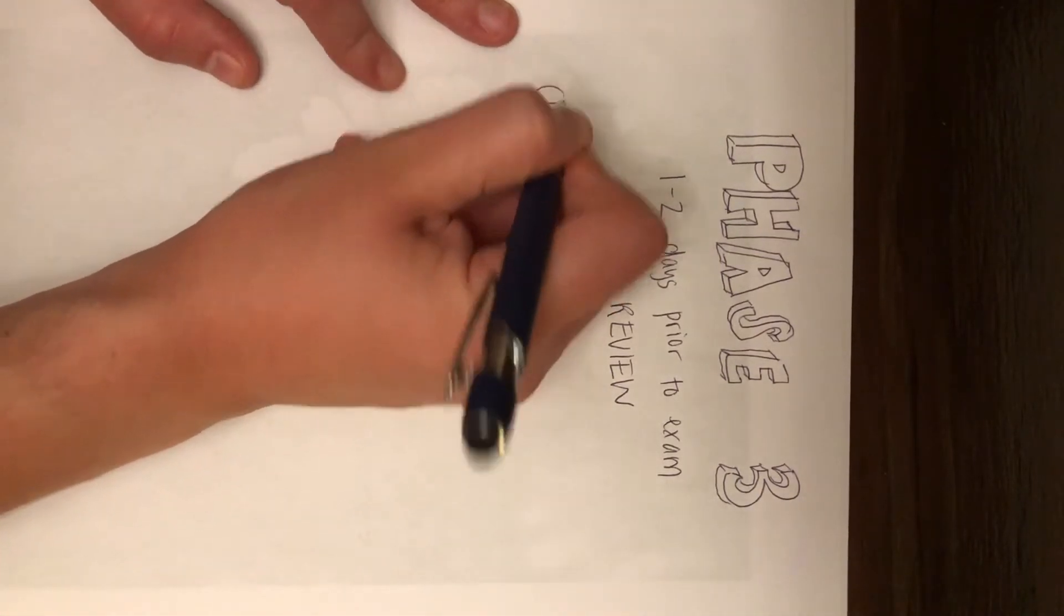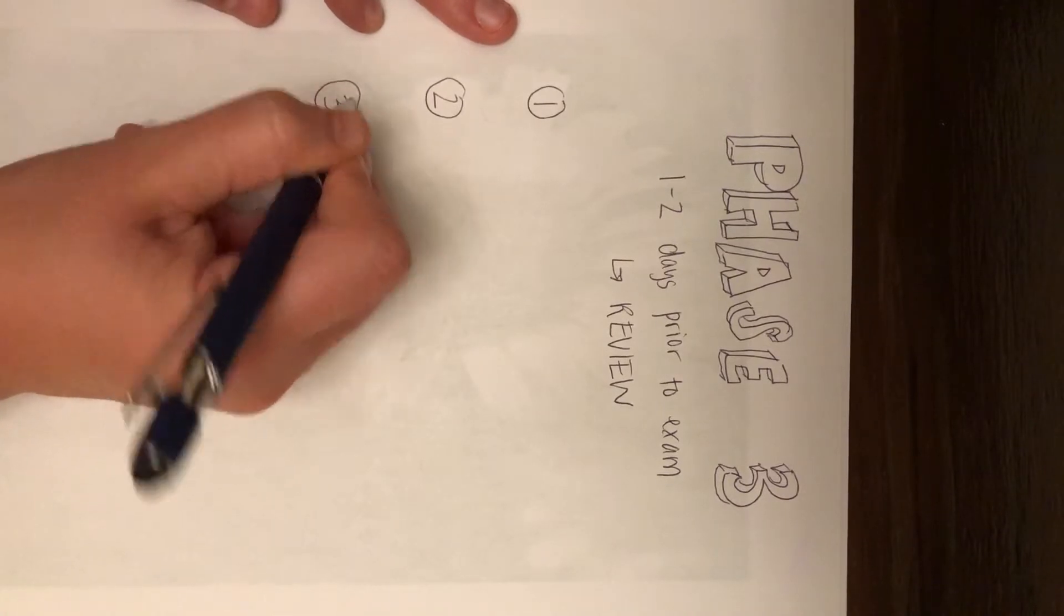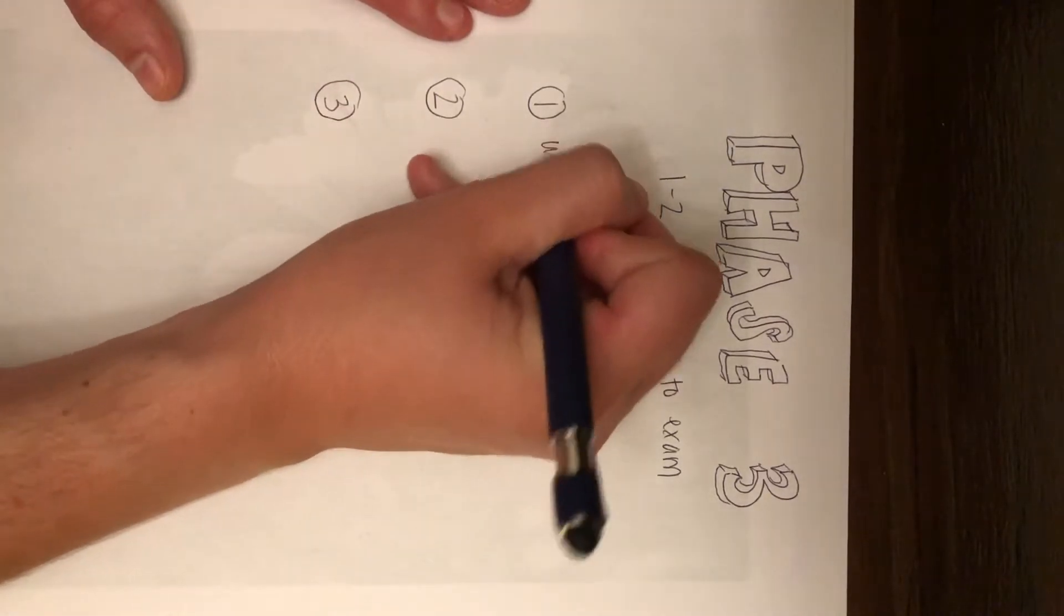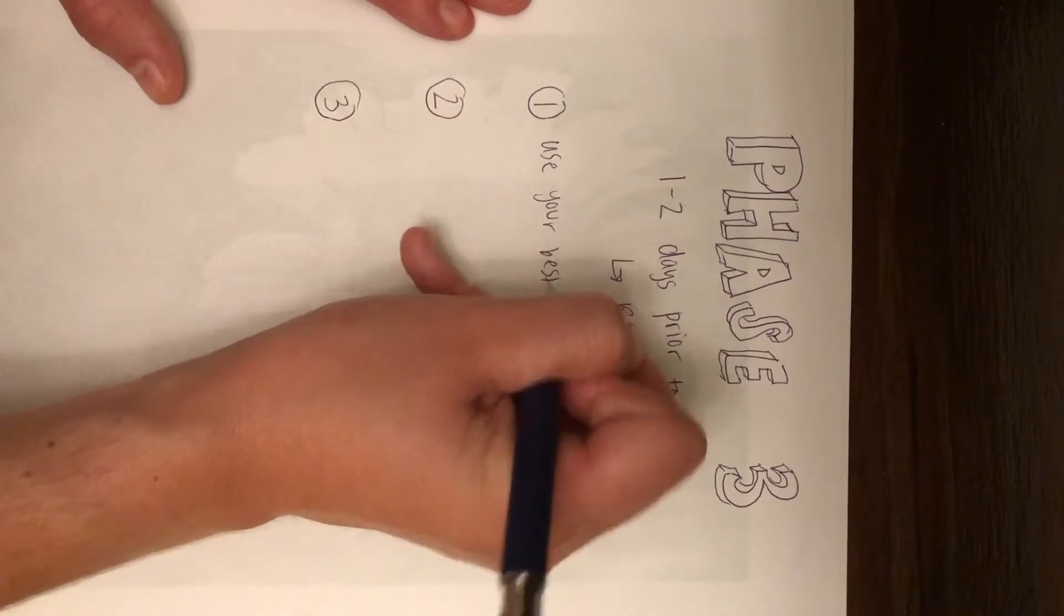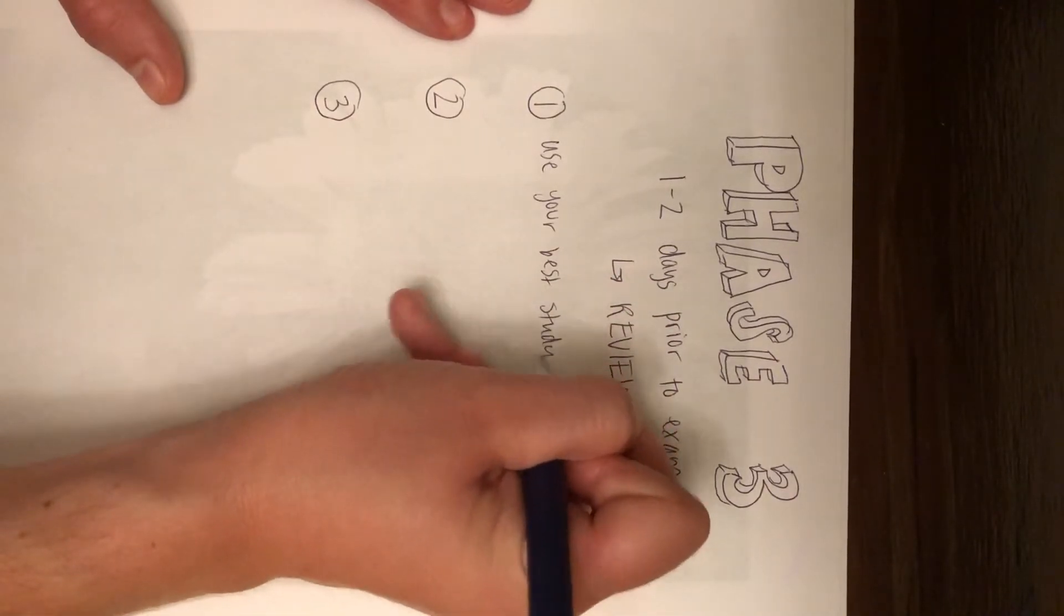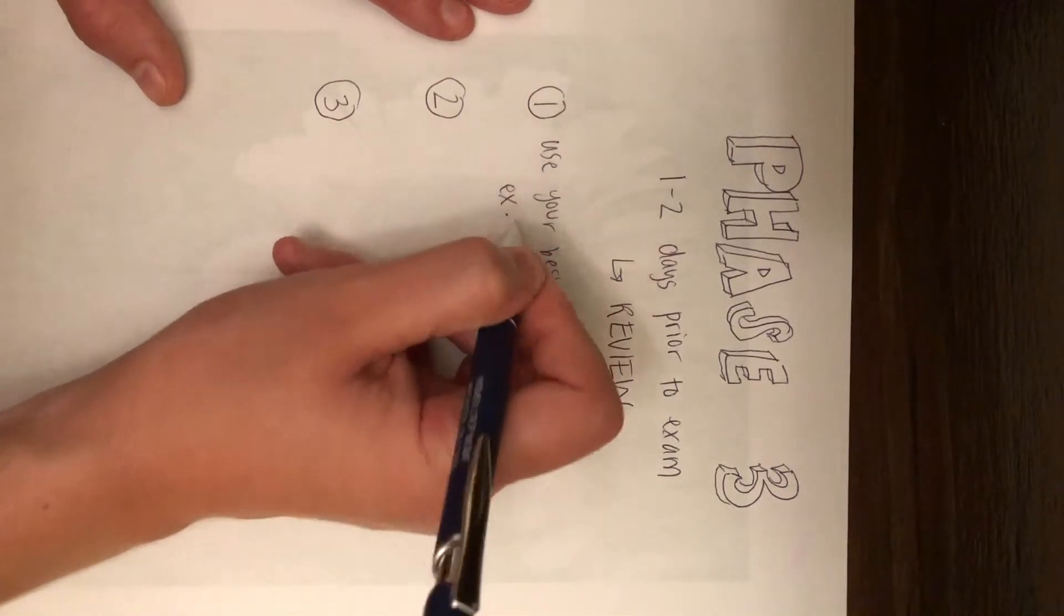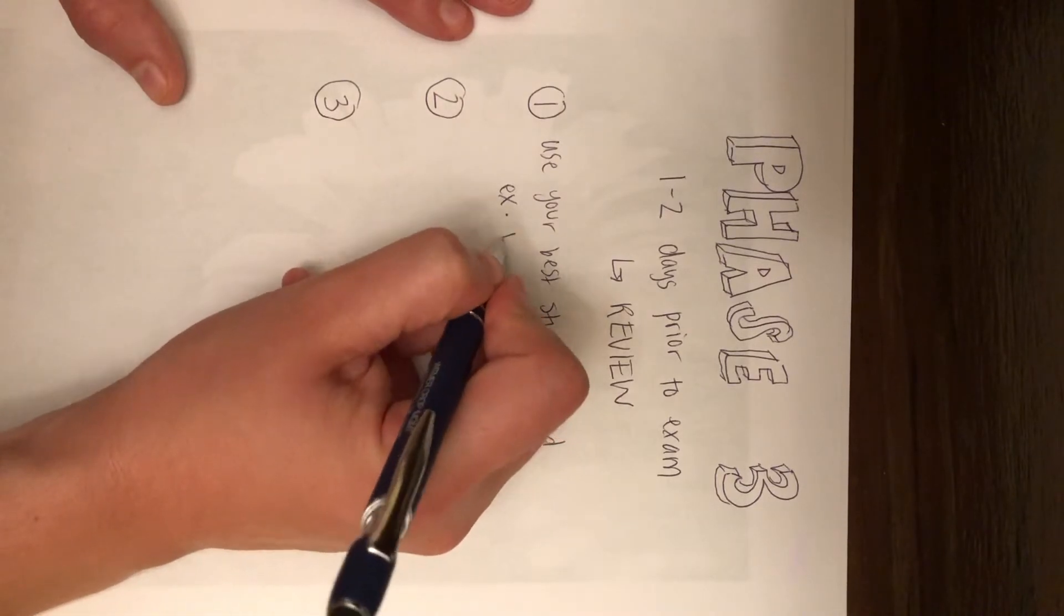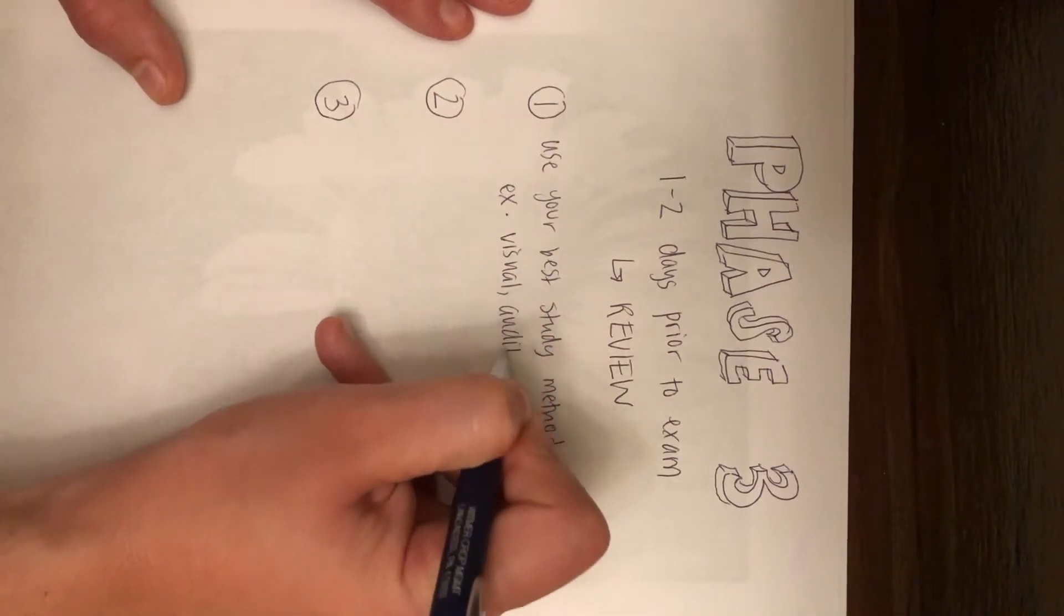So first it's really important to know your best learning style so that you can study the material accurately and in the most helpful way. So if you are a visual learner then maybe drawing diagrams or rewriting can help. If you're an auditory learner maybe talking it out or teaching it to a friend. If you're a kinesthetic learner then maybe going to the lab and practicing certain skills or walking around while you study can be helpful.